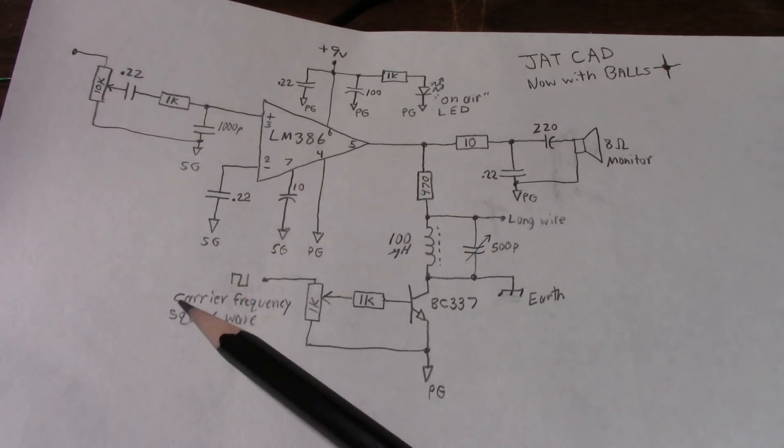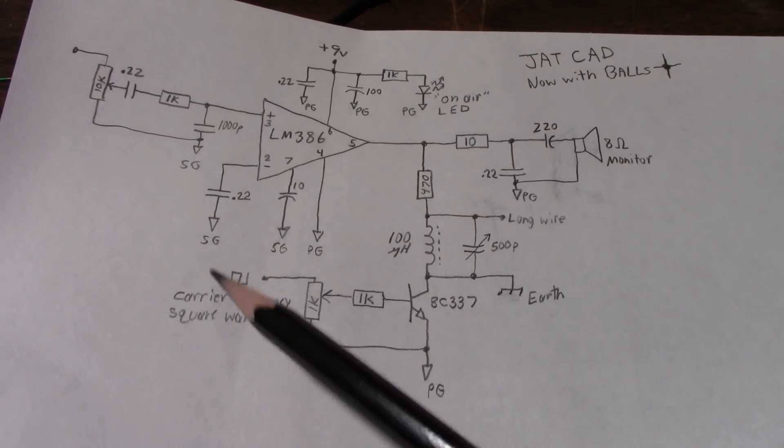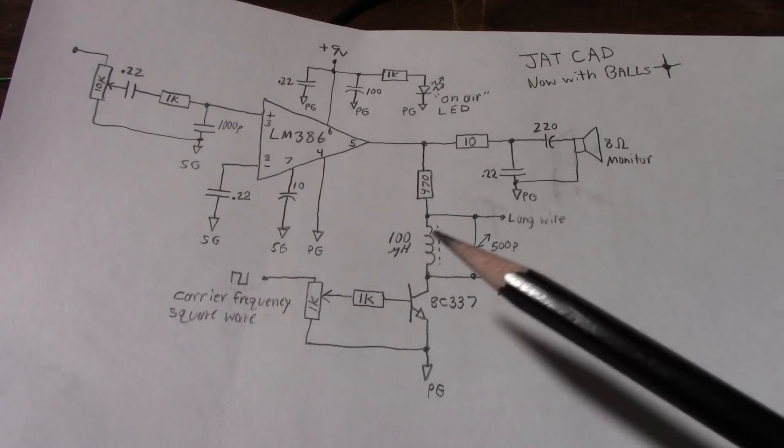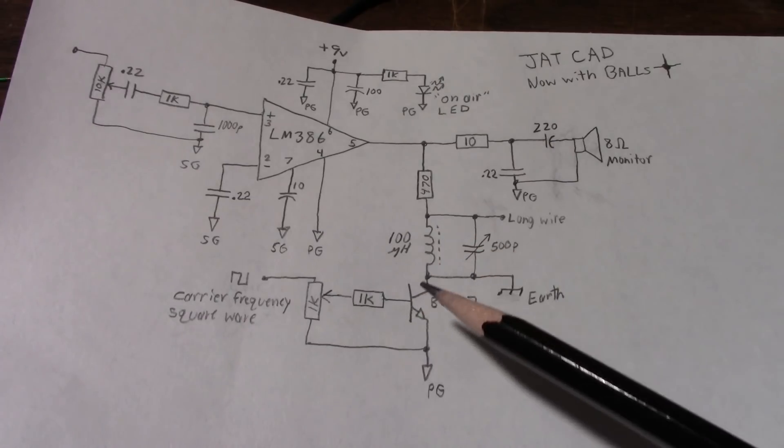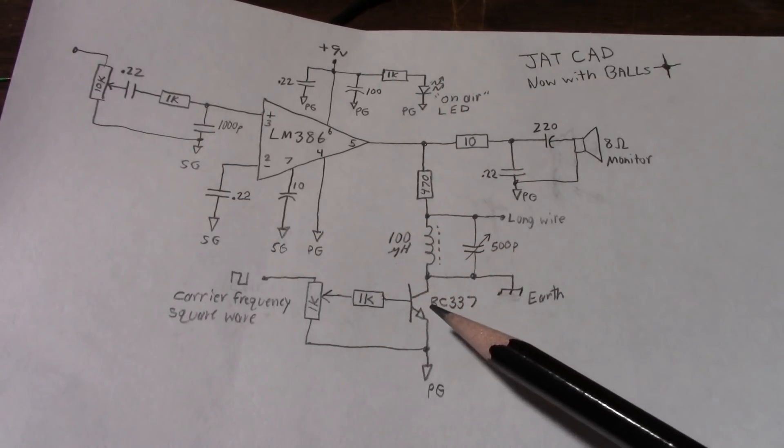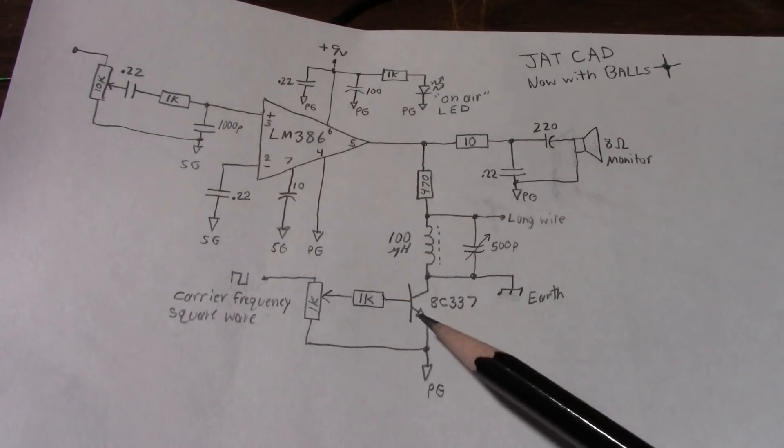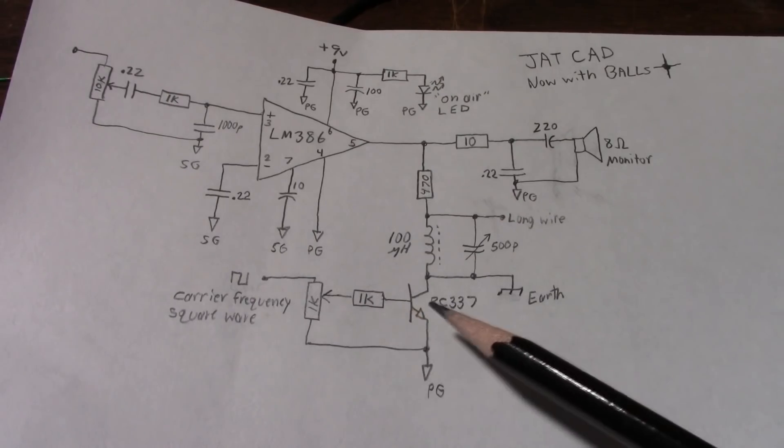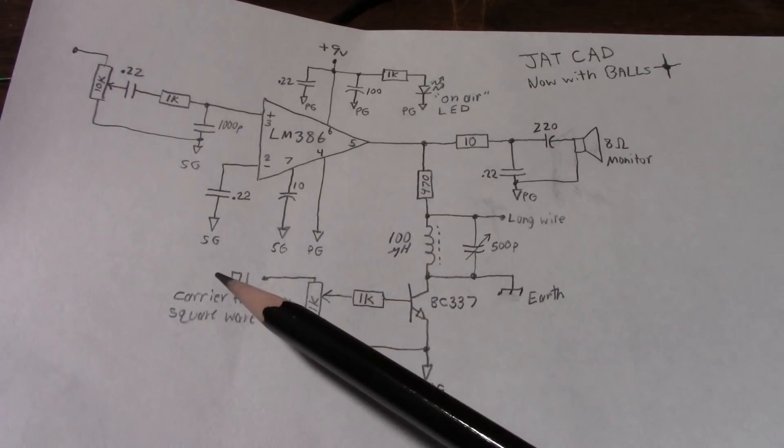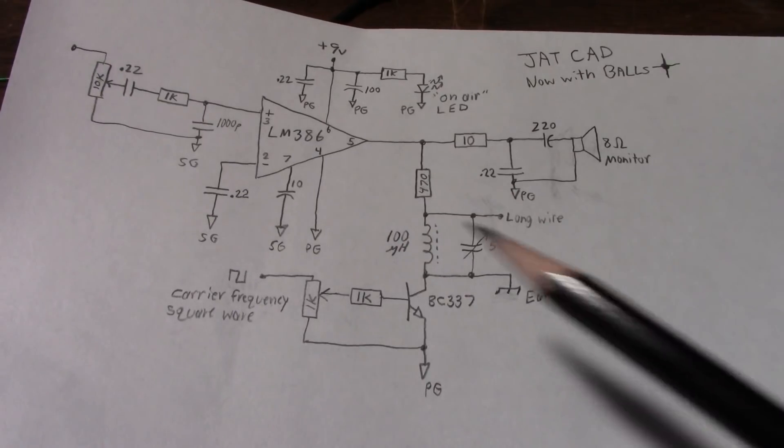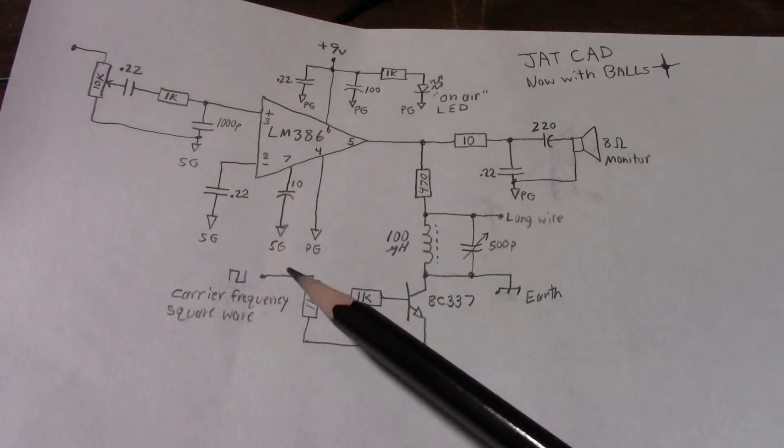Over here is where the carrier frequency signal is injected into the circuit. This should be a square wave because you'll get a 50% duty cycle here which will work better with the circuit. If you use a sine wave you have to meet that 0.6 volt base emitter diode junction drop which can make the duty cycle less. It might give you reduced power. It's just better to use a square wave here. The output will be a sine wave though. But I'd recommend using a square wave.